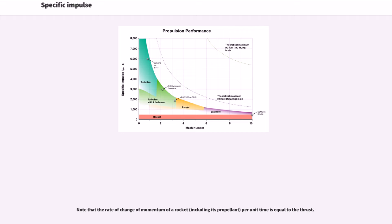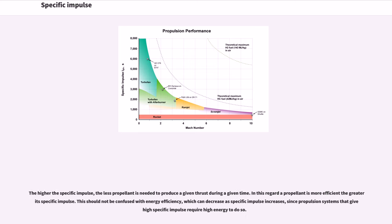The rate of change of momentum of a rocket per unit time is equal to the thrust. The higher the specific impulse, the less propellant is needed to produce a given thrust during a given time, so a propellant is more efficient the greater its specific impulse. This should not be confused with energy efficiency, which can decrease as specific impulse increases, since propulsion systems that give a high specific impulse require high energy to do so.